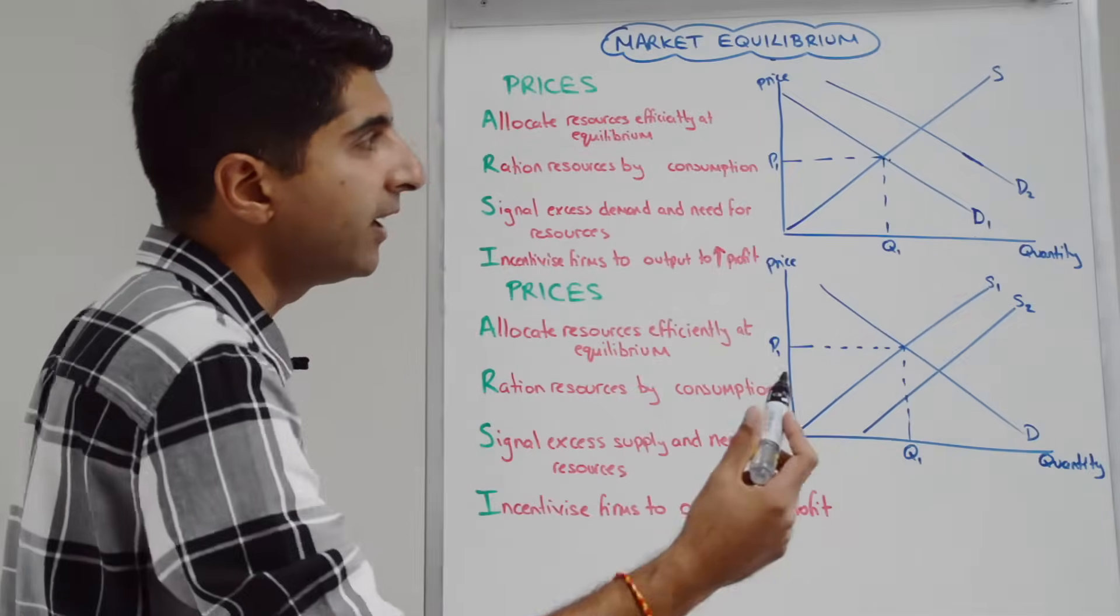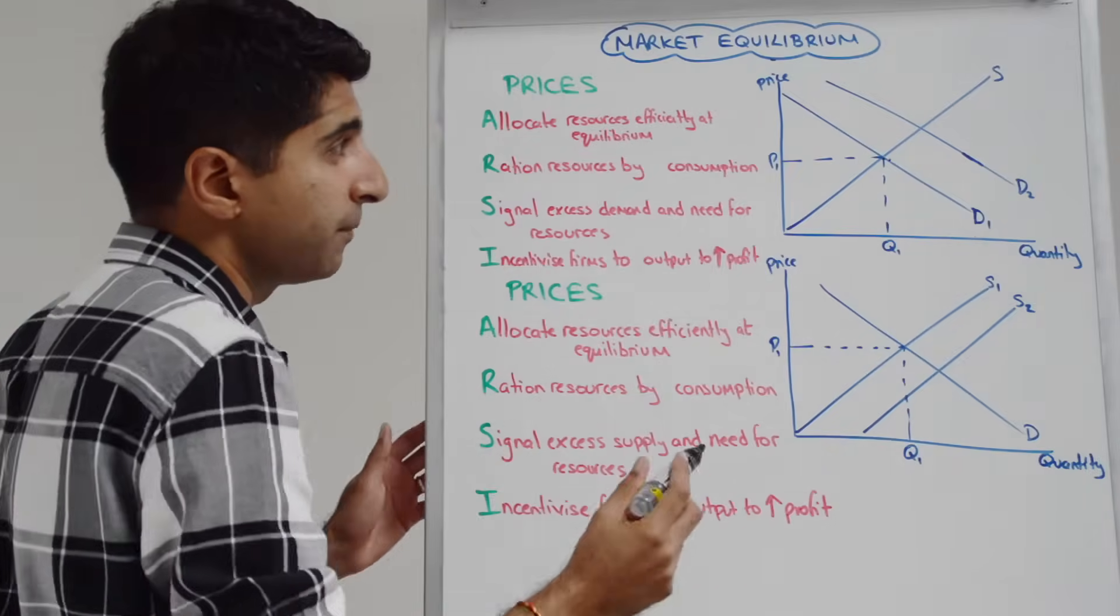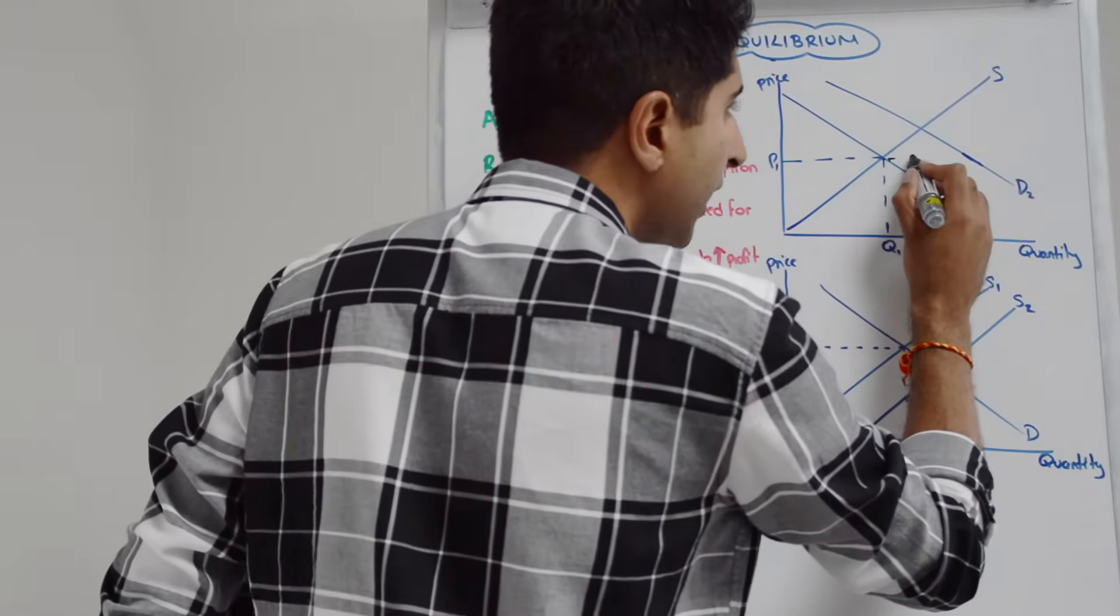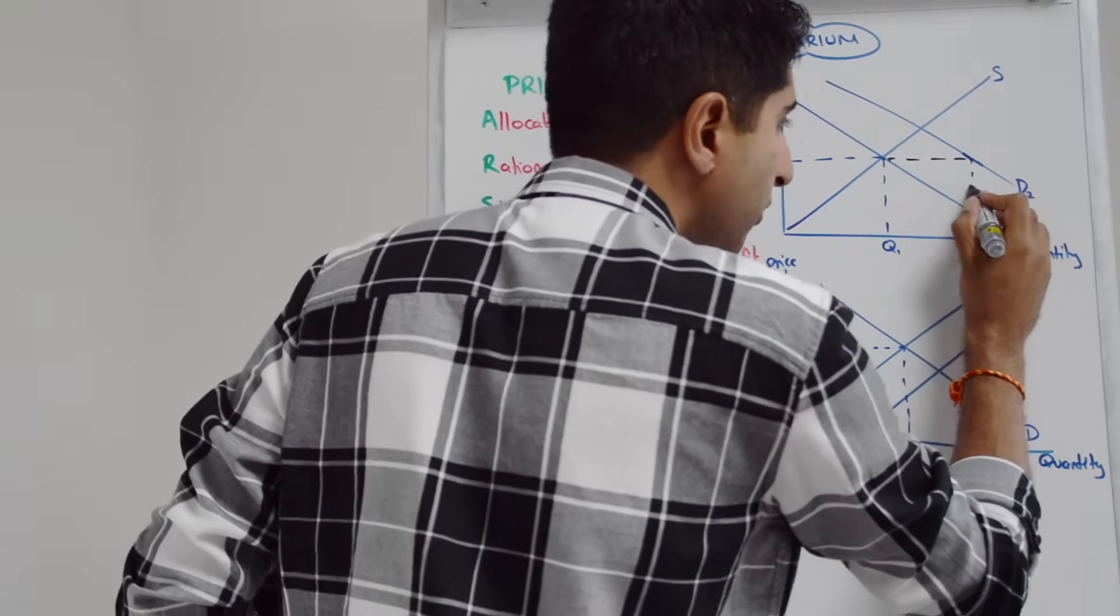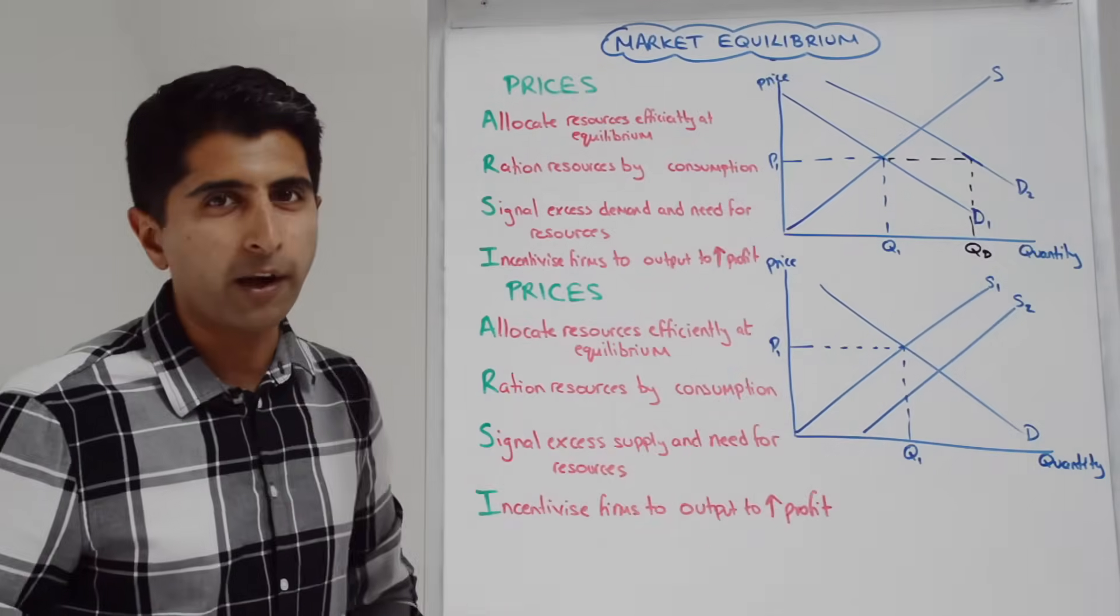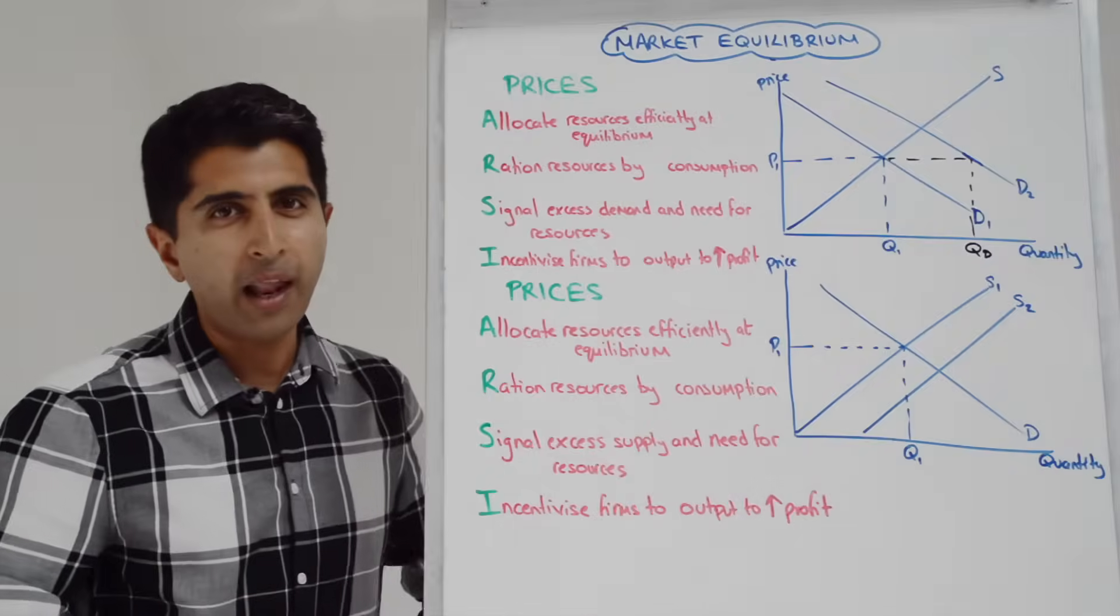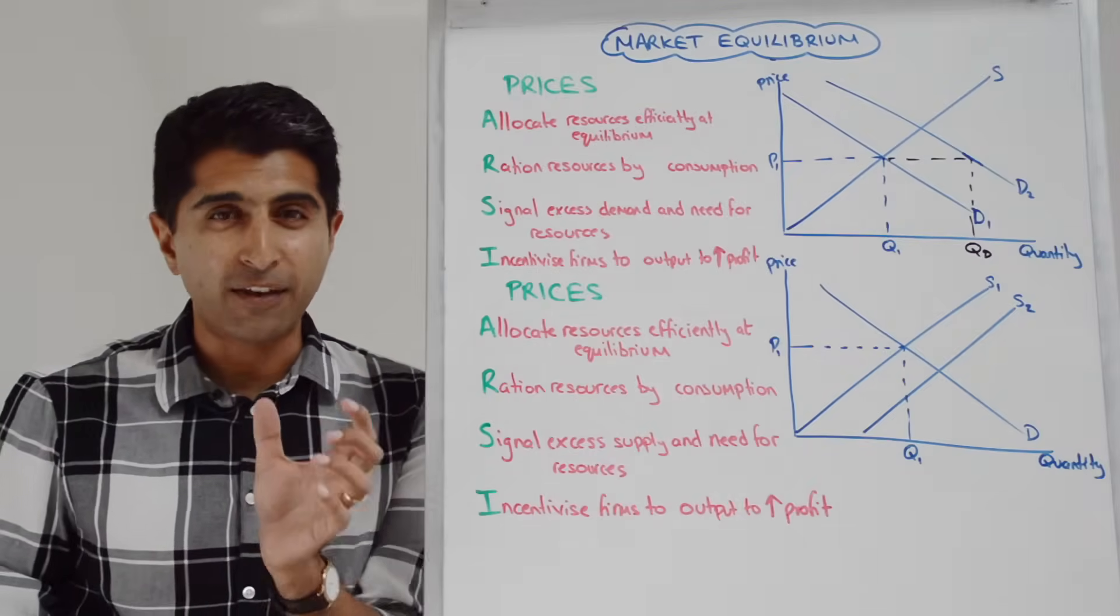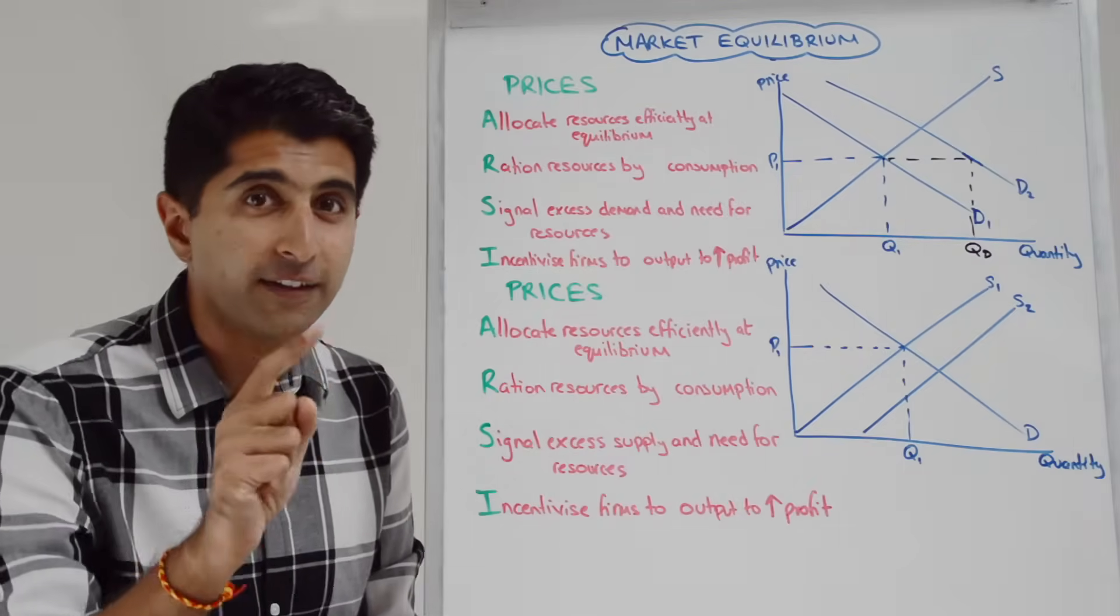So in this case demand has shifted right but it's shifted at the initial price of P1, so extend P1 across to find the new demand which is all the way over here, call it QD, where supply has remained at Q1. So demand is greater than supply, this is an excess demand, this is a shortage, that's the disequilibrium.